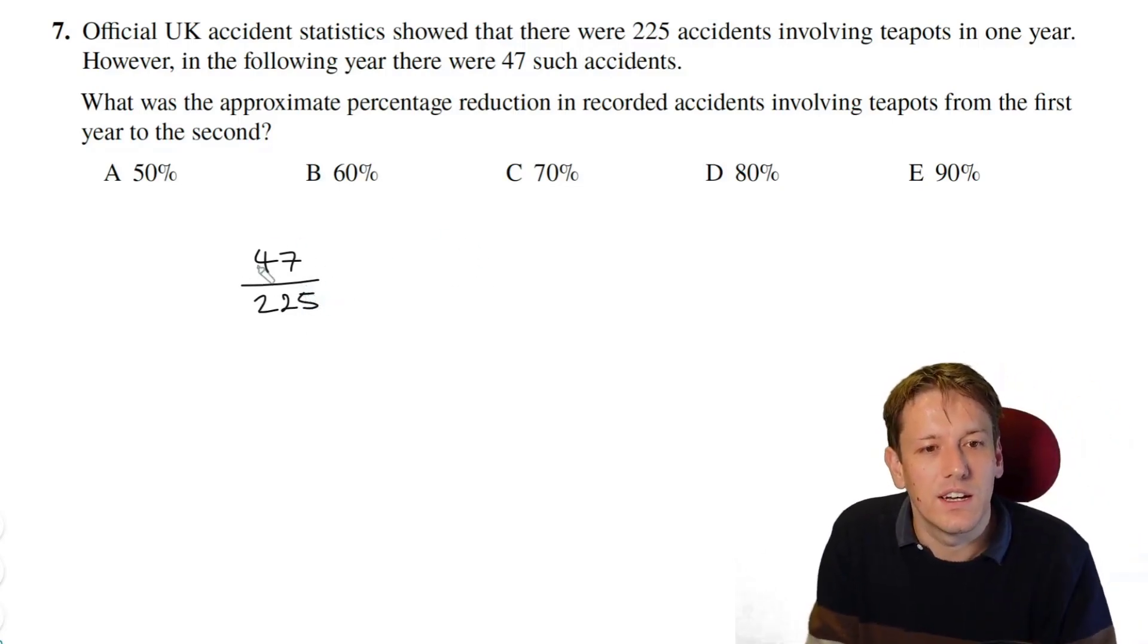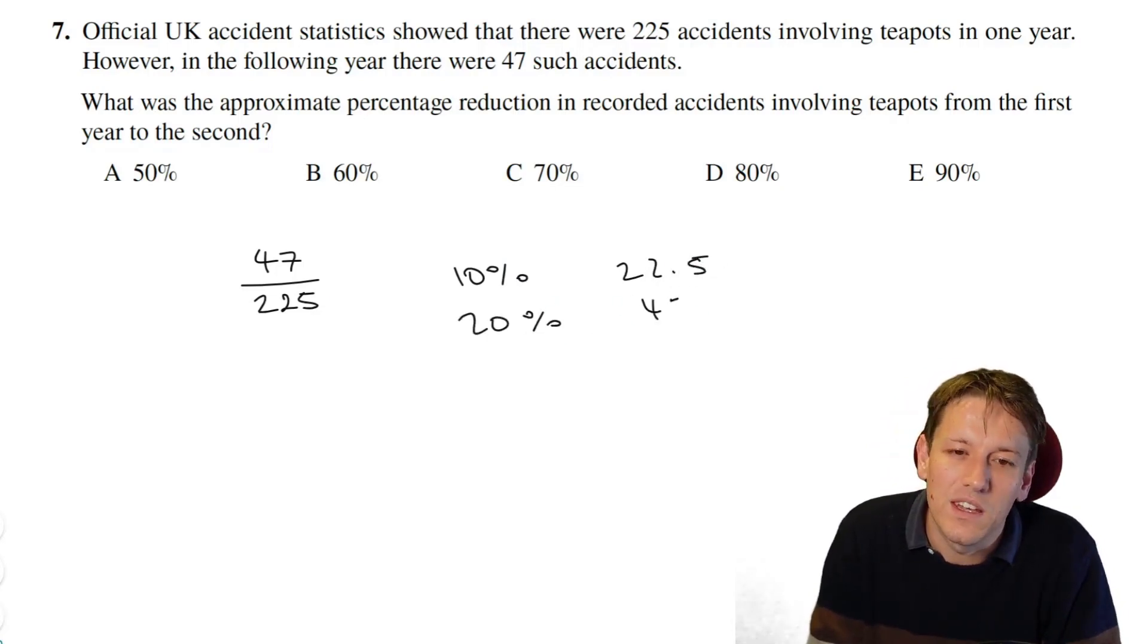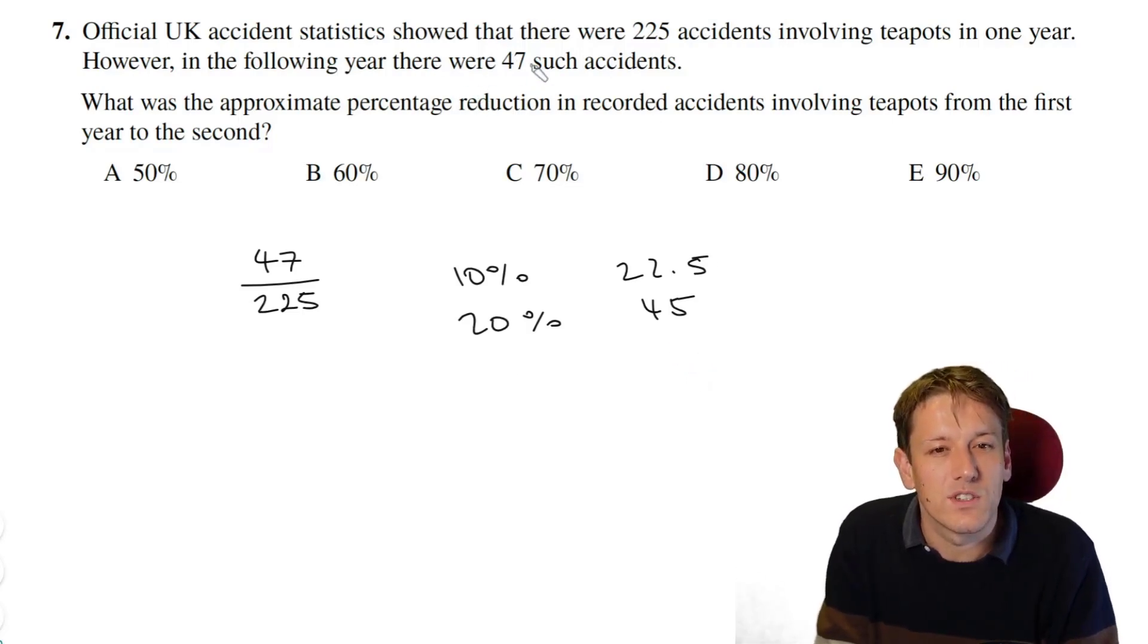So there's a couple of ways we could do this. We could just kind of round 47 to a close-ish whole number, or we could say, well, if I look at 225, I know 10% of 225 is 22.5, so 20% would be 45, and so actually this number is going to be closest to 20%, it's going to be closer to 20% than 30%, surely, which is going to be 67.5. So it's a 20%, so it's 20% of the year before, that means an 80% reduction, and so the answer is D.